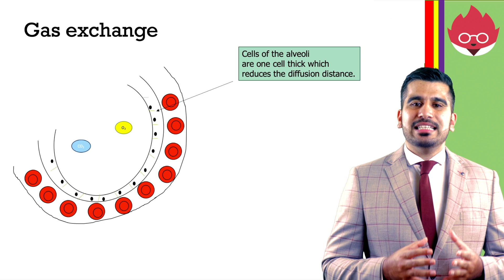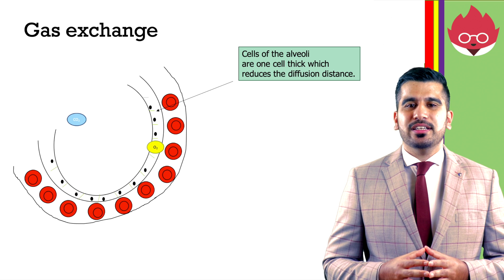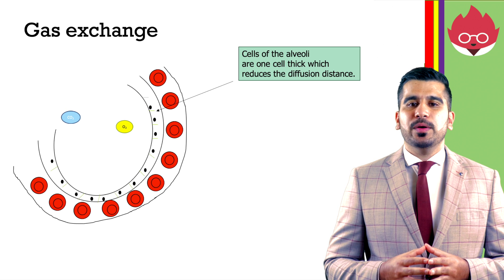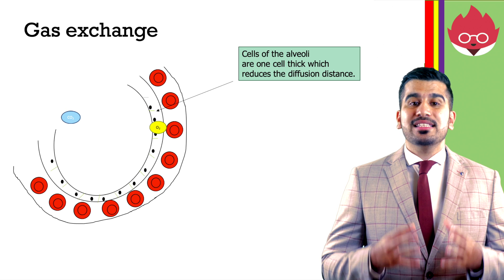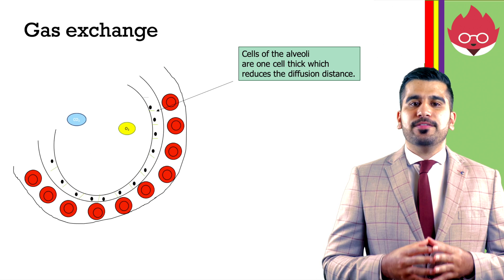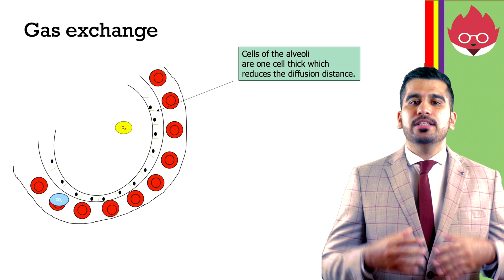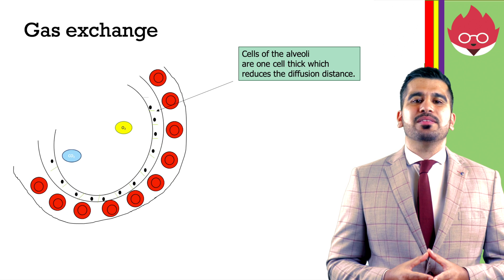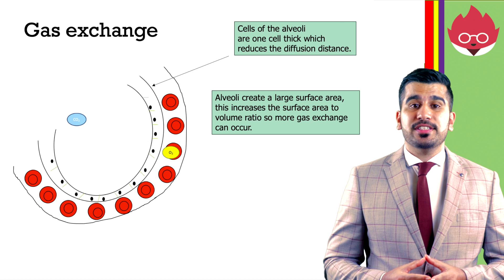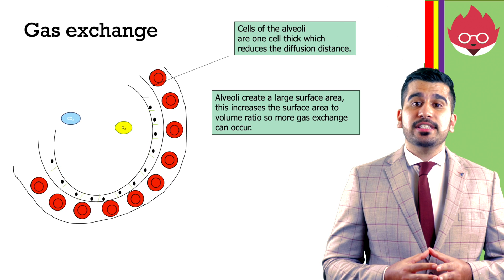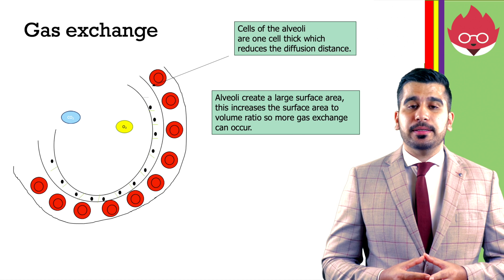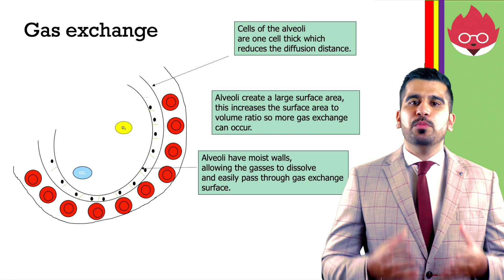Your alveoli are adapted to allow for gas exchange to occur. These adaptations include: the cells of the alveoli are one cell thick, which reduces the diffusion distance. If the diffusion distance is shorter, diffusion occurs much more quickly. Alveoli create a large surface area, which increases the surface area to volume ratio, so more gas exchange can occur. Alveoli have moist walls.